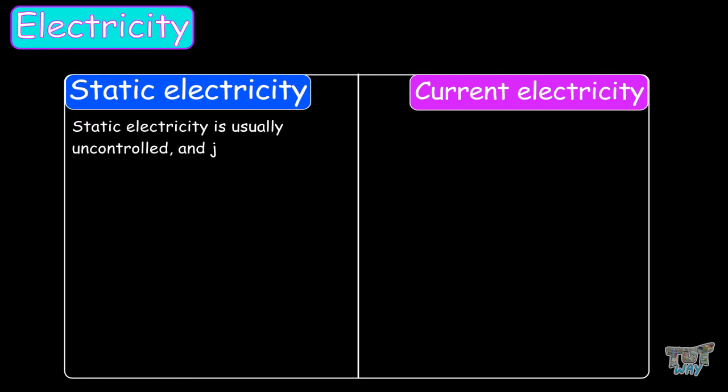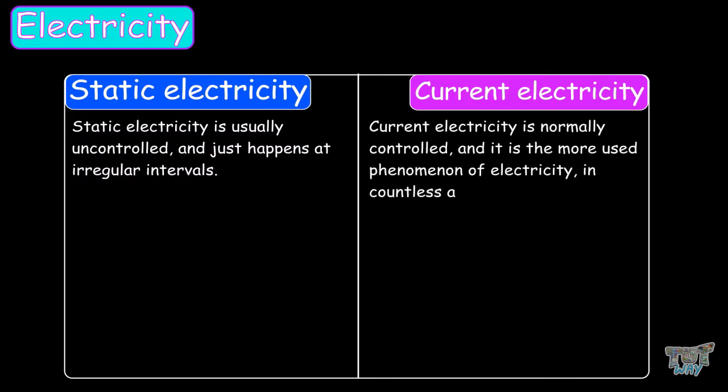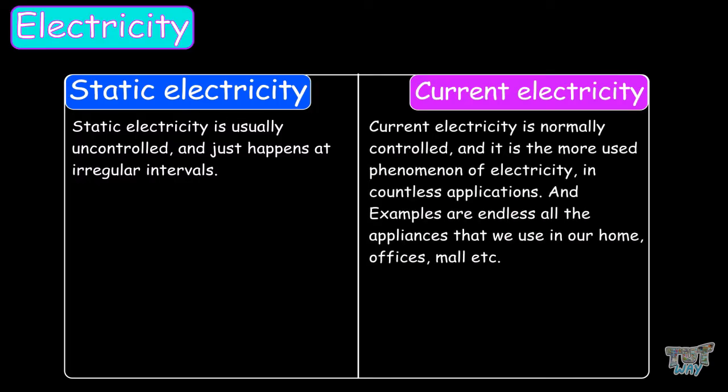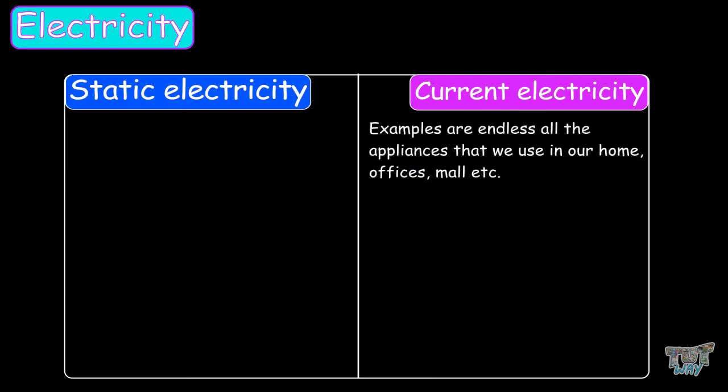Static electricity is usually uncontrolled and happens at irregular intervals. Current electricity is normally controlled, and it is used in countless applications, and the examples are endless. All the appliances that we use in our homes, offices, malls, etc. use current electricity.